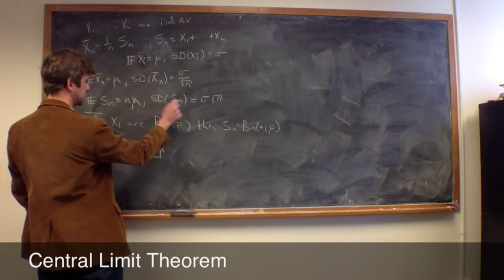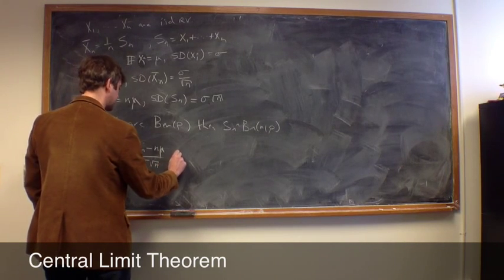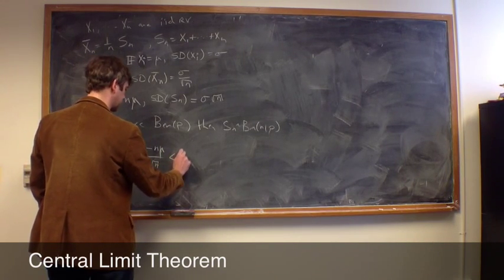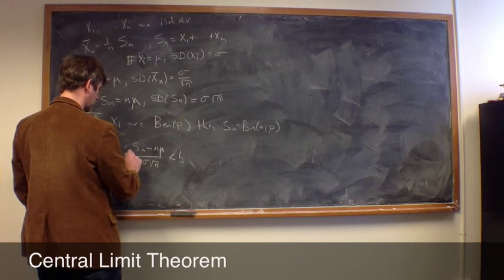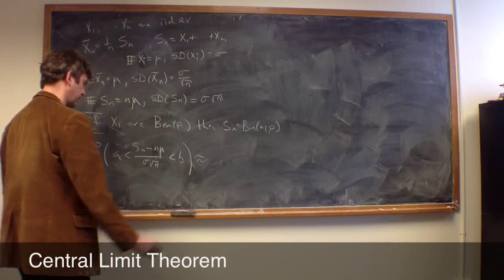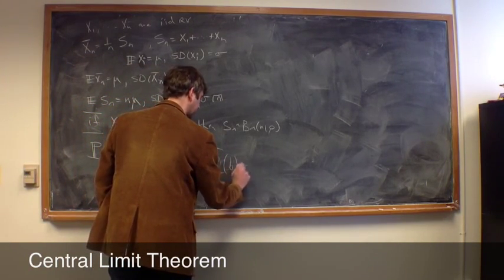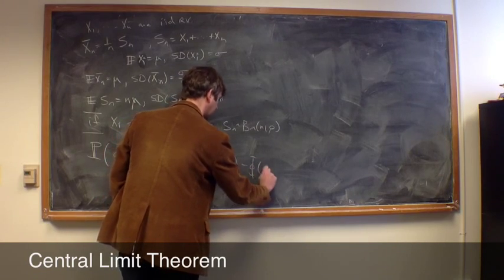which is, in this case, sigma square root of n, the probability that this is less than b, but greater than a is approximately equal to phi of b minus phi of a.